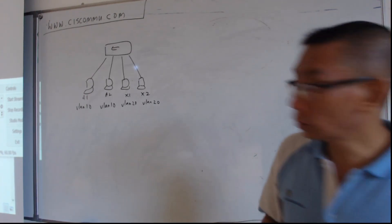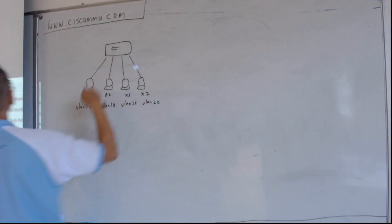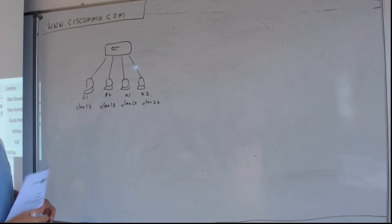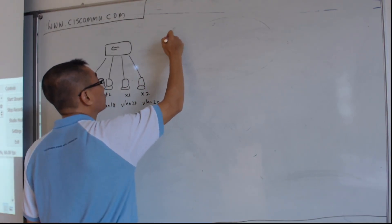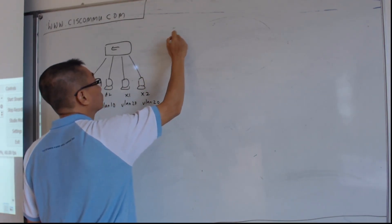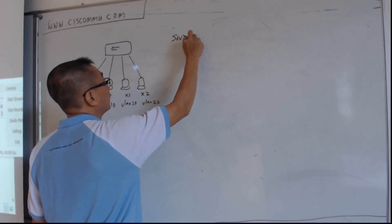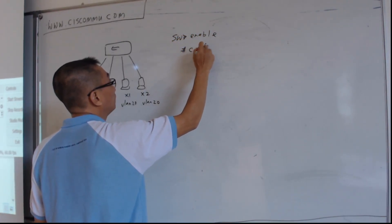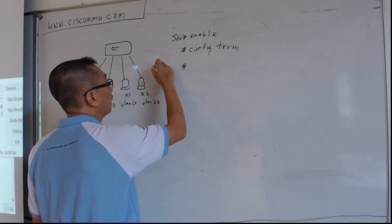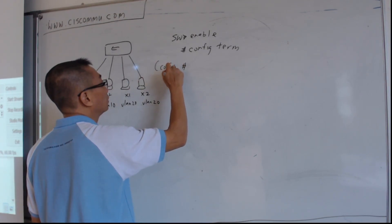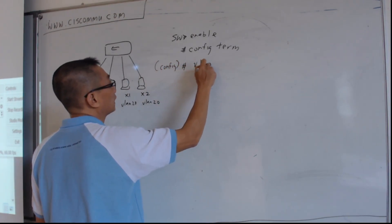So what you can do on this switch is you can create VLANs. How do you create VLANs? Just specify on the switch, enable, then config term. After that you go into the config mode and you can create VLAN 10.